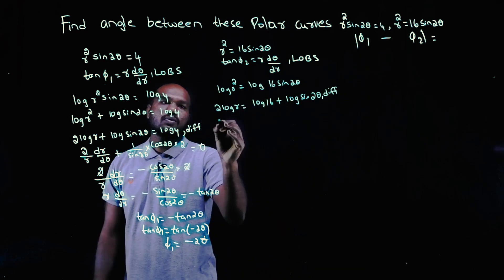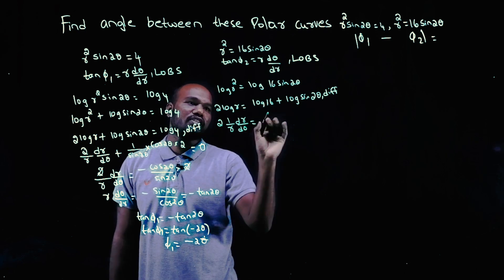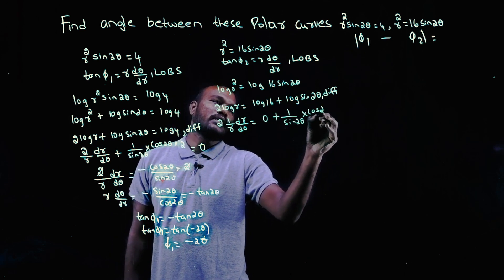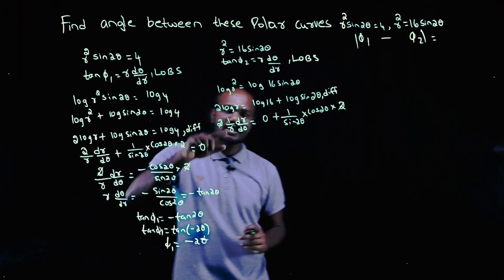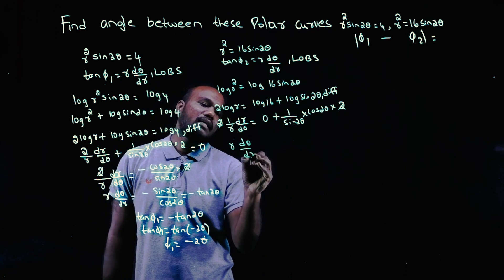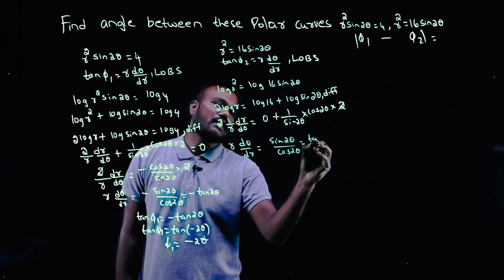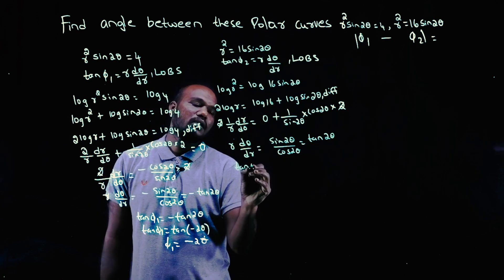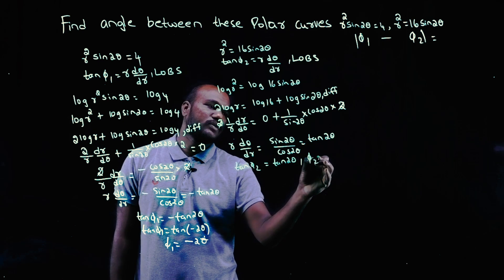Differentiating, 2·(1/r)·dr/dθ = 0 + (1/sin2θ)·cos2θ·2. The 2s cancel. I'm not interested in 1/r but in r, so flipping gives r·dθ/dr = sin2θ/cos2θ = tan2θ. Since tan φ2 = tan2θ and tan cancels, φ2 = 2θ.